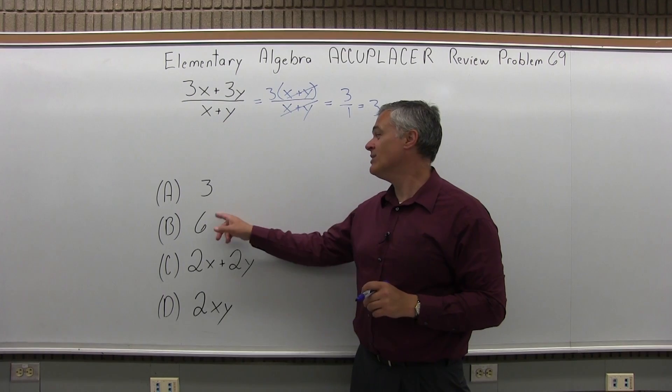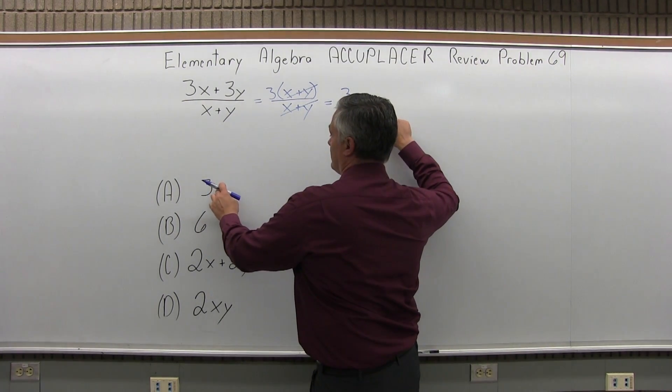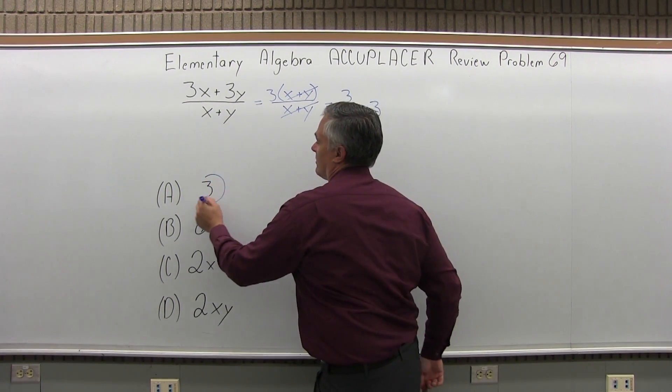They want to try and see if they can trick you, but when you factor and then cancel, option A is the correct answer.